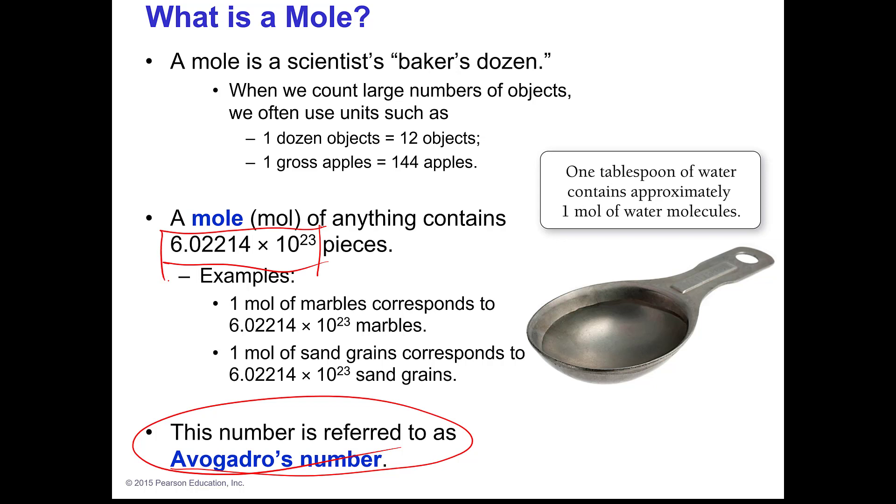Avogadro's number is 6.022 times 10 to the 23rd. You're going to see it written different ways with different numbers of decimal places. Typically we're going to use 6.022 times 10 to the 23rd. And that's anything - pieces, moles, molecules, whatever - in one mole of something. That's how many of them there are.